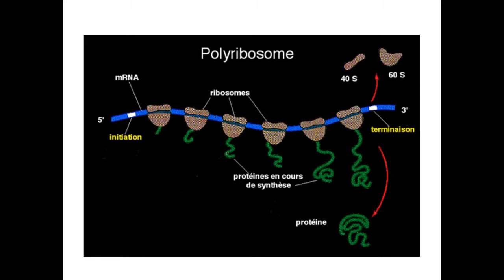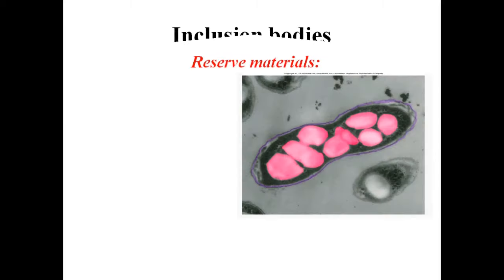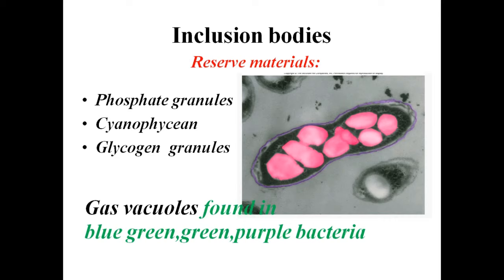The final topic is inclusion bodies. Reserve material in prokaryotic cells is stored in the cytoplasm in the form of inclusion bodies. They are not bound by any membrane system and lie free in the cytoplasm. Examples include phospholipid granules, cyanophycin granules, and glycogen granules.